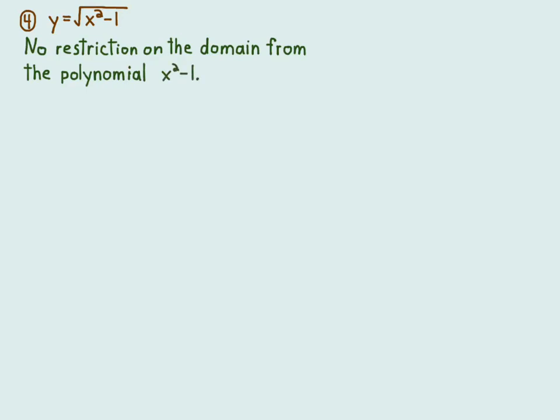So you look for restrictions from the square root. The restrictions on the argument of the square root is that the argument has to be greater than or equal to zero because square root is index two and two is even.